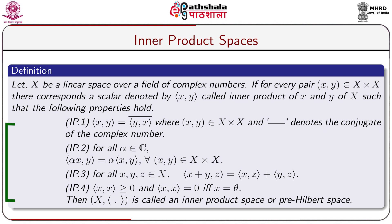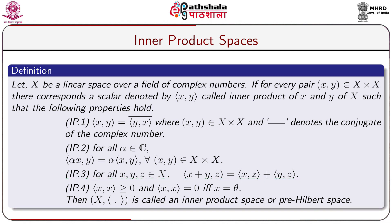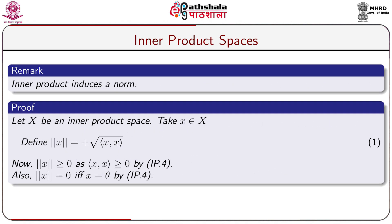Axiom IP3: for all x, y, z belonging to X, ⟨x + y, z⟩ = ⟨x, z⟩ + ⟨y, z⟩. Axiom IP4: ⟨x, x⟩ ≥ 0, and ⟨x, x⟩ = 0 if and only if x equals the zero vector theta. Then X with the inner product is called an inner product space or a pre-Hilbert space, and the bracket is called the inner product function.